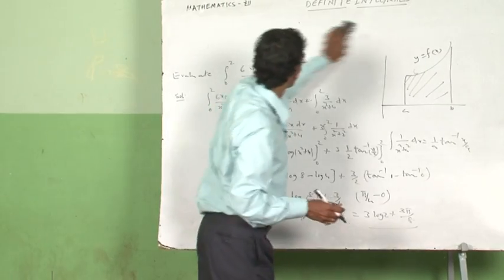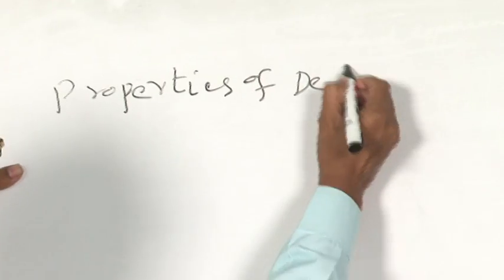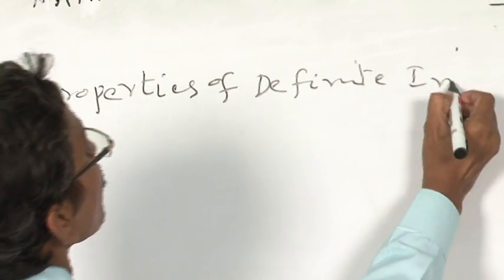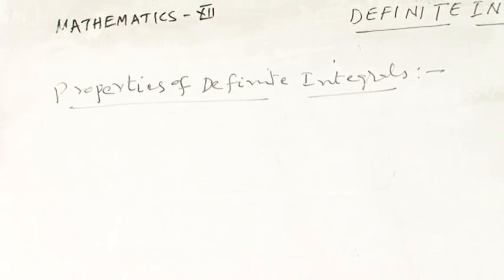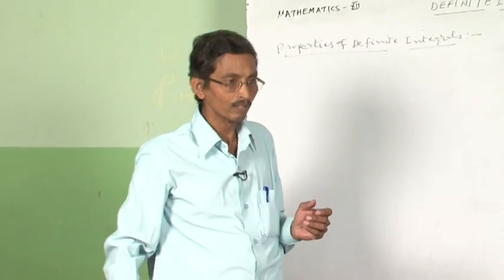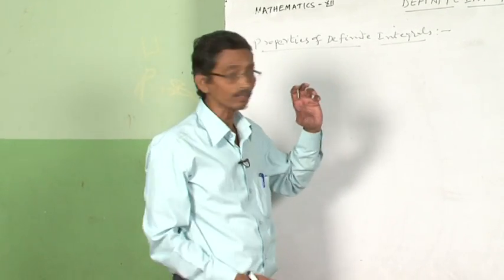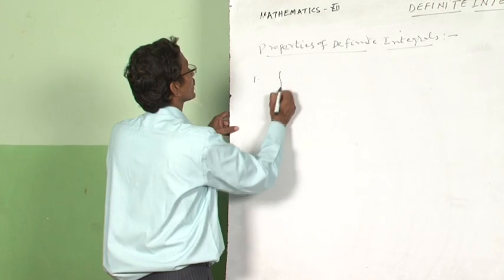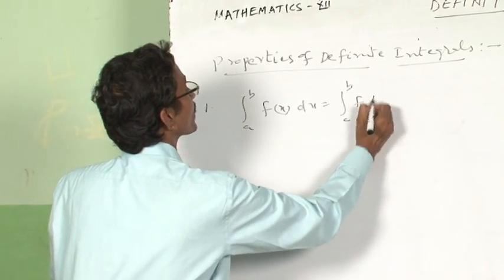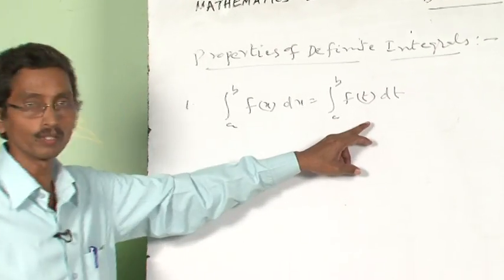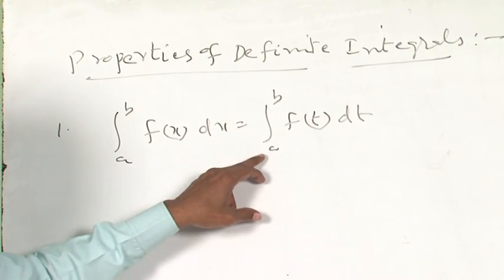Next, I will introduce some properties of definite integrals, which are helpful to evaluate given questions in an easy way. Property 1: the integral from a to b of f(x) dx equals the integral from a to b of f(t) dt. This is the change of variable property — by changing the variable from x to t, the value of the integral remains the same.